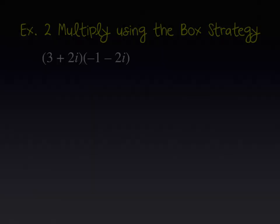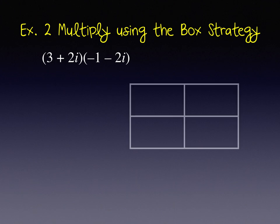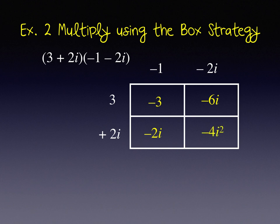We'll have another example multiplying using the box strategy: 3 plus 2i times negative 1 minus 2i. And I'll multiply 3 times negative 1, and now 3 times negative 2i, negative 1 times positive 2i, and negative 2i times positive 2i here.